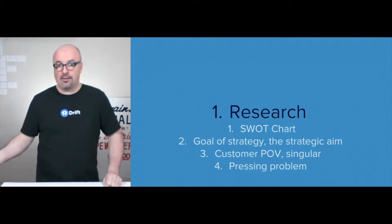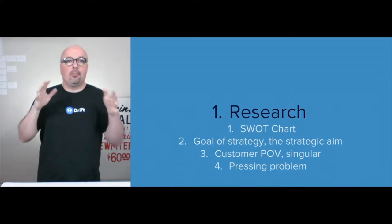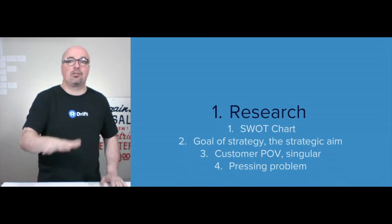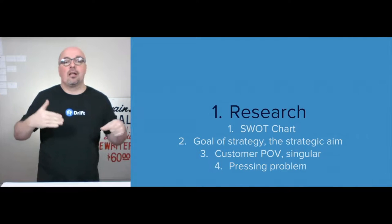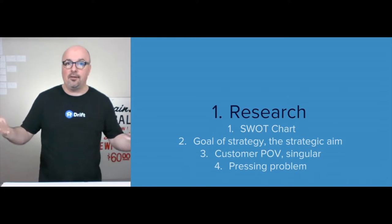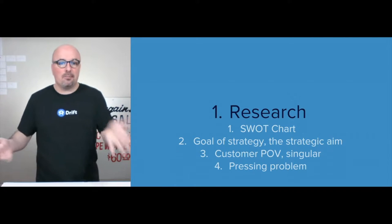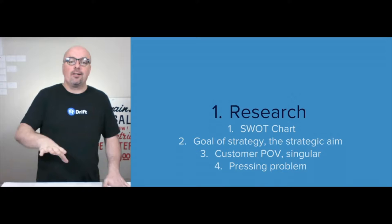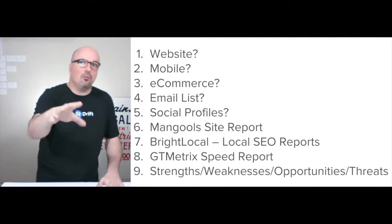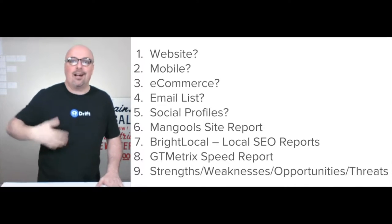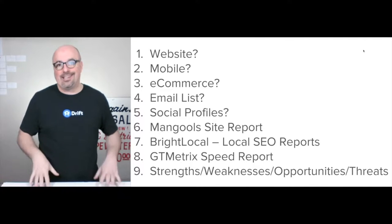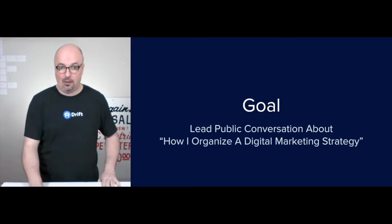The first step is research. The idea is I'm putting together what's called a SWOT chart — strengths, weaknesses, opportunities, and threats — specific to one brand. It's a living document because you're going to update it over time as things change. The idea is to have that SWOT chart inform decisions, specifically: what's the goal of the strategy, what's the customer point of view, and what's that customer's pressing problem?